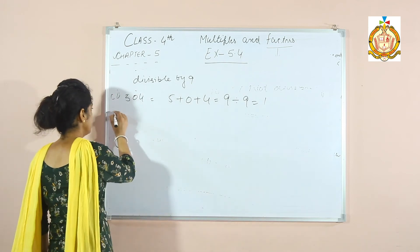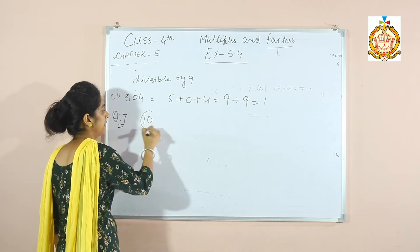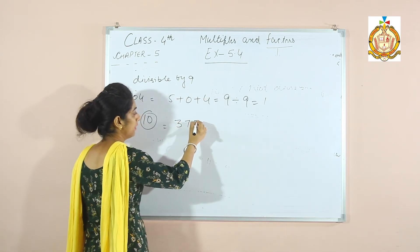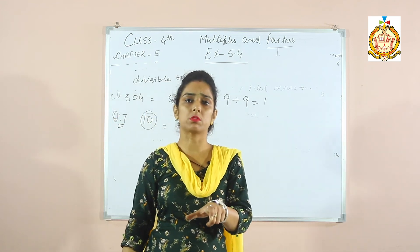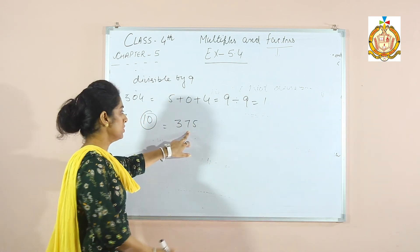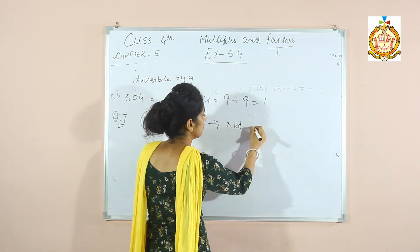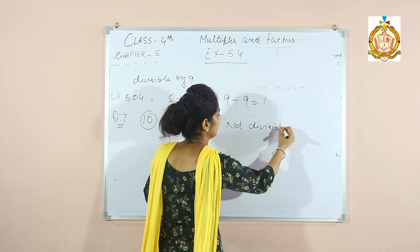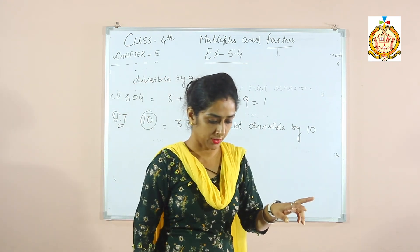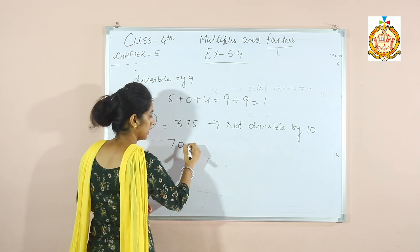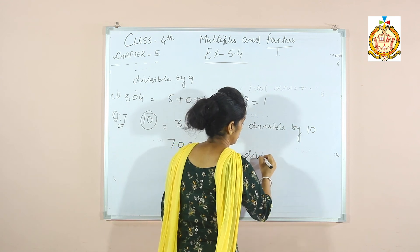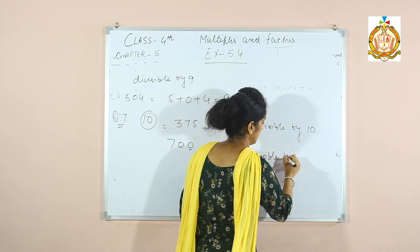Last question: check whether numbers are divisible by 10. A number is divisible by 10 only if its last digit is 0. The number 375 ends in 5, so it is not divisible by 10. But 700 ends in 0, so it is divisible by 10.